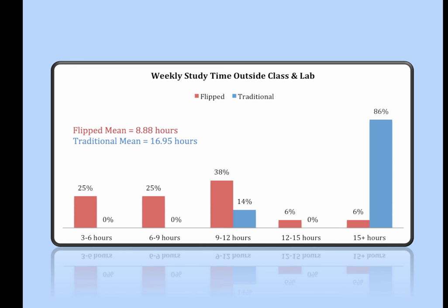So they were studying twice as much but only learned half as much. By flipping the classroom, we're making the class much more efficient—students have to study less total time, and yet they're learning at a much deeper level, especially on the concepts measured by the pre- and post-test.